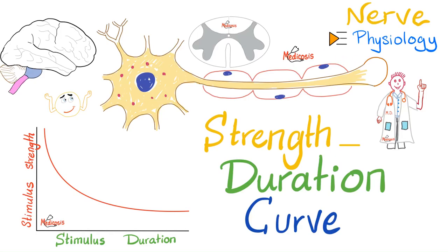It's Medicosis Perfectionalis, aka the Rolls Royce of medical education, and today we continue our nerve physiology series. In the previous video I talked about the structure of the neuron. Today it's time to talk about the strength-duration curve.